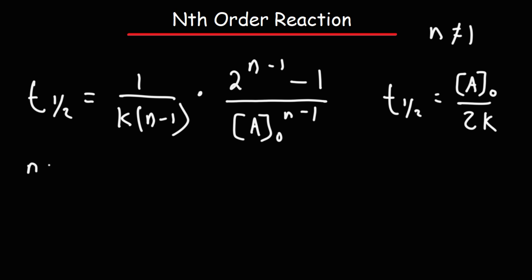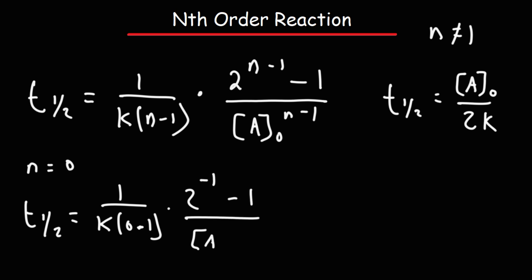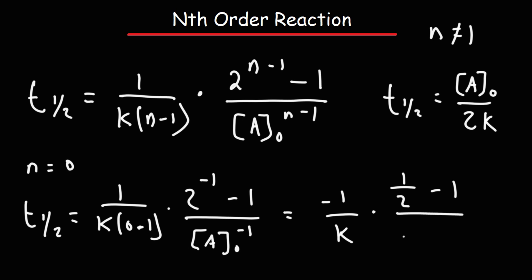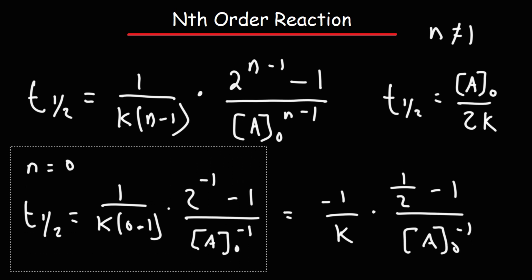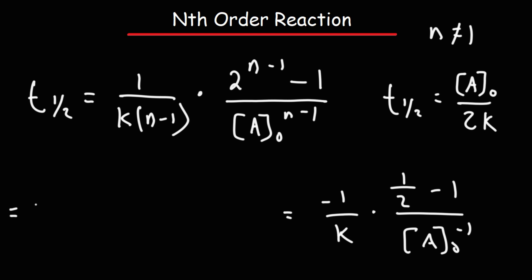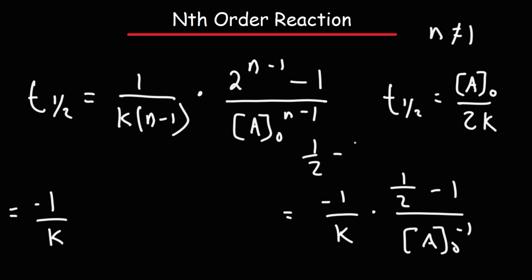For a zero order reaction, we're going to plug in zero for n. So we're going to have 1 over k times (0 minus 1), times 2 raised to (0 minus 1) — which is negative 1 — and then a_initial raised to (0 minus 1), which is also negative 1. So here we have negative 1 times k, which we can write as negative 1 over k. Then 2 to the negative 1 is 1/2. So we have (1/2 minus 1). We can write negative 1 as 2/2, so 1/2 minus 2/2 is negative 1/2.